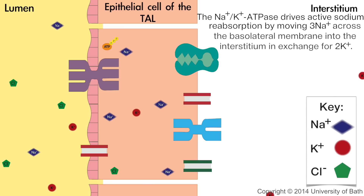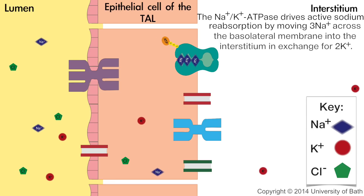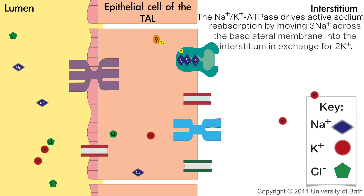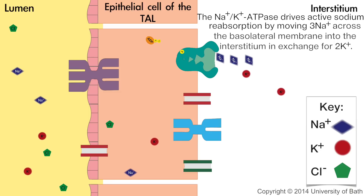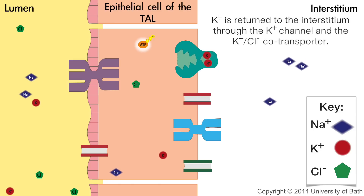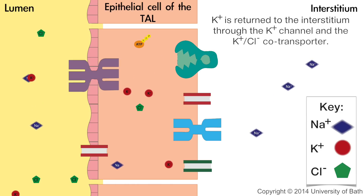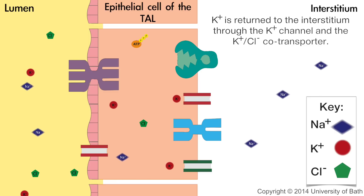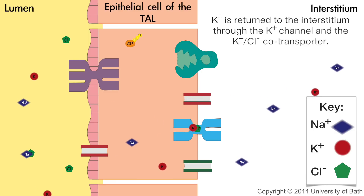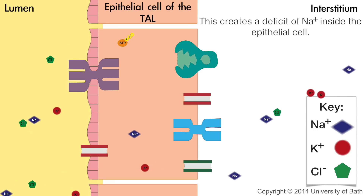The sodium-potassium ATPase drives active sodium reabsorption by moving free sodium across the basolateral membrane into the interstitium in exchange for two potassium ions. Potassium is returned to the interstitium through the potassium channel and the potassium-chloride cotransporter. This creates a deficit of sodium inside the epithelial cell.